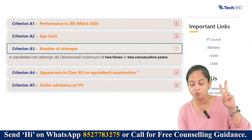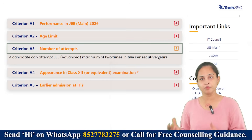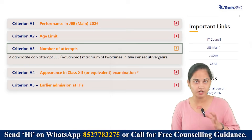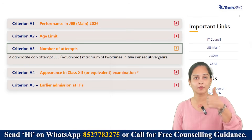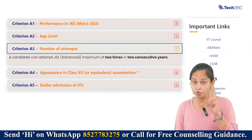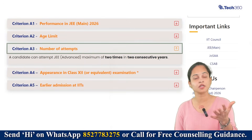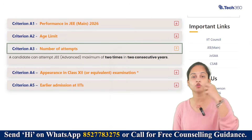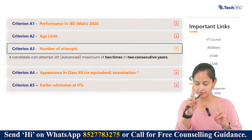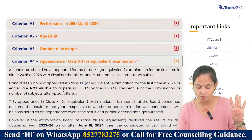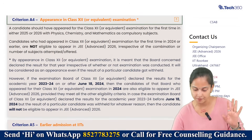Criteria number three is the number of attempts. A candidate can attempt JEE Advanced a maximum of two times in two consecutive years. For example, if you appeared in your board examination in 2025, you can give JEE Advanced in 2025 and 2026. If you are appearing for your board examination in 2026, you will be eligible for 2026 and 2027.